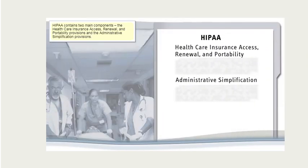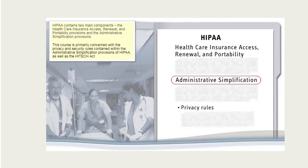HIPAA contains two main components: the Health Care Insurance Access Renewal and Portability Provisions, and the Administrative Simplification Provisions. This course is primarily concerned with the privacy and security rules contained within the Administrative Simplification Provisions of HIPAA, as well as the HITECH Act.